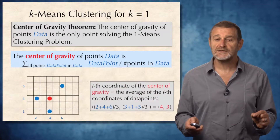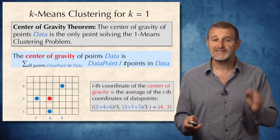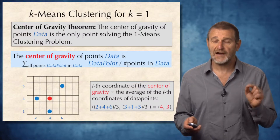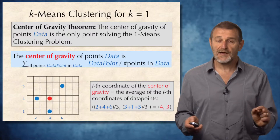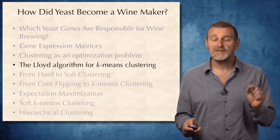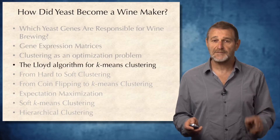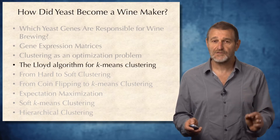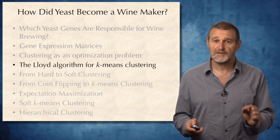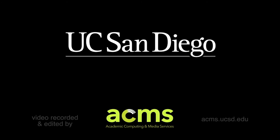In other words, the i-th coordinate of the center of gravity is simply the average of the i-th coordinates of all points in the dataset. Now, after introducing the notion of k-means clustering, we are ready to describe the Lloyd algorithm, the most popular approximation algorithm for solving the k-means clustering problem.